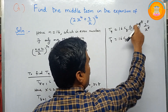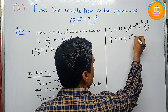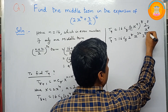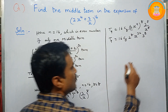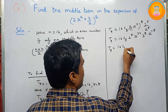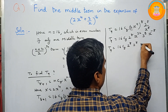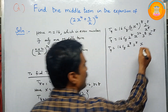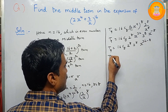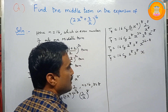Bringing x^8 from the denominator to the numerator gives x^(−8). Combining x^32 and x^(−8) — since bases are the same, add the powers: 32 − 8 = 24. So T9 = 16C8 · 2^8 · 3^8 · x^24.